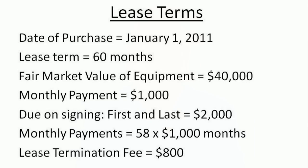In this example, we are assuming the following facts. The date of purchase is January 1, 2011. The lease term is 60 months. The fair market value of the equipment at the date of purchase is $40,000. The monthly payment is $1,000. The amount due on signing is the first and last, which is $2,000. And there will be 58 payments of $1,000 each. There is also a lease termination fee of $800.